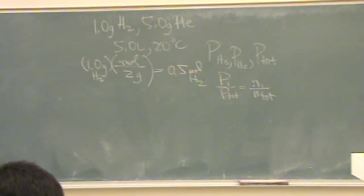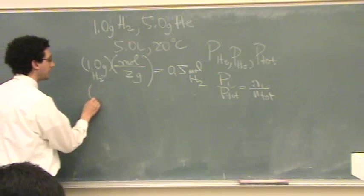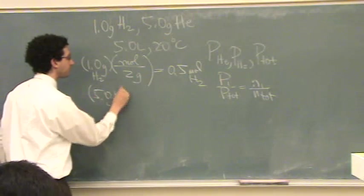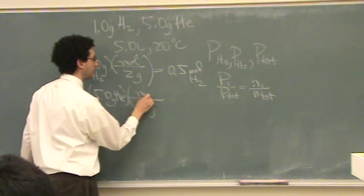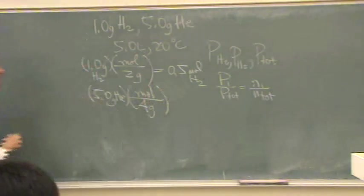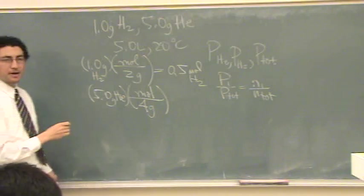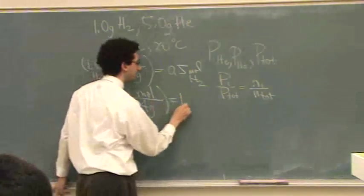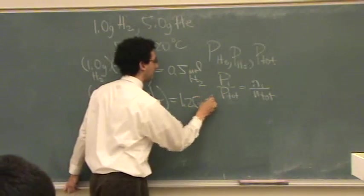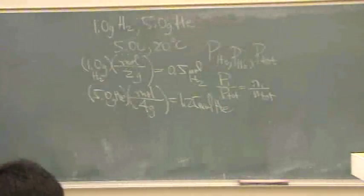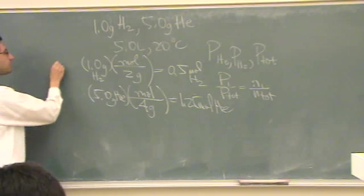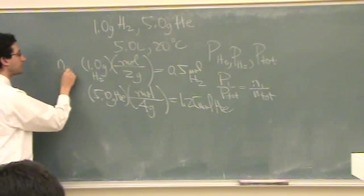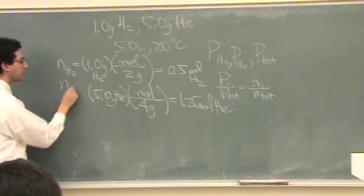Now, I'll do the same for helium. Helium is 5.0 grams of helium, times, it's about 4 grams per mole. So, what's that, about 1.25? Okay, so there's helium and hydrogen, and this is moles of H2, and moles of helium.